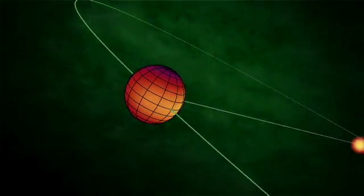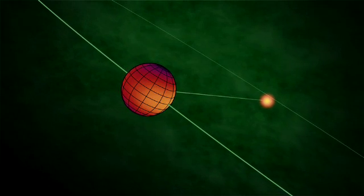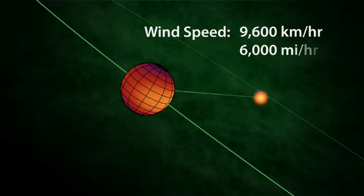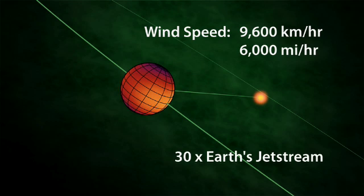The researchers deduced this shift is caused by ferocious winds in the upper atmosphere that sweep the hot clouds around the planet before they can cool off much. The wind speeds could be as high as 9,600 kilometers an hour or 6,000 miles an hour. That's about 30 times faster than the jet streams in Earth's atmosphere.